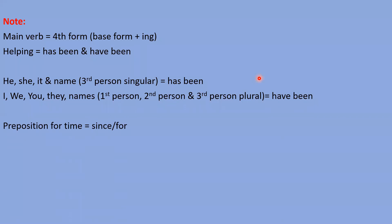Now this is the main point — preposition of time. For the preposition of time, we need to use 'since.' When we talk about the point of exact time of that action, we need to use 'since.' Duration of time — we need to use 'for.'